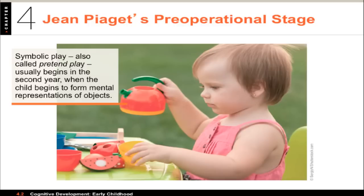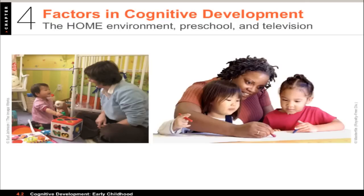Children below a certain age would simply say that other people saw what they saw, and would be surprised if they didn't. So that's egocentrism — really the inability to see the perspective of others. Eventually, when a child understands that their mom or dad don't already know what happened to them at school, that's a milestone in this development.